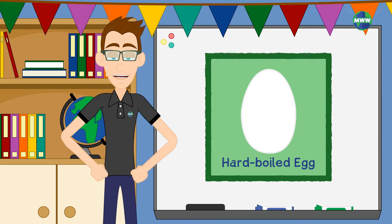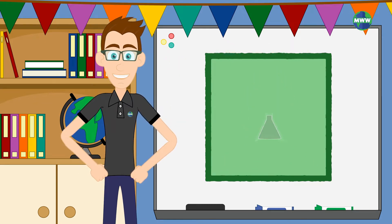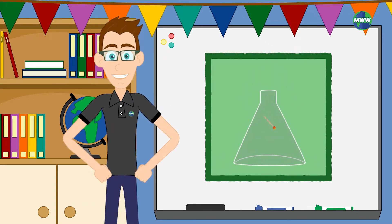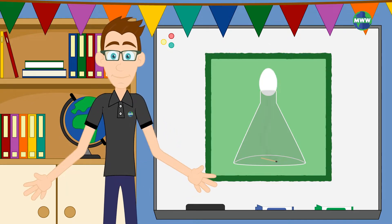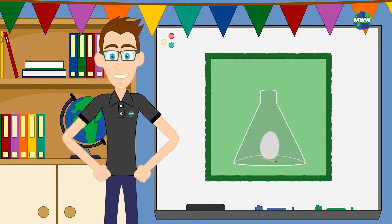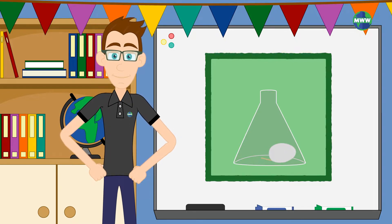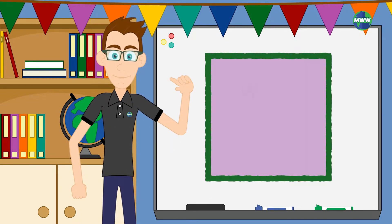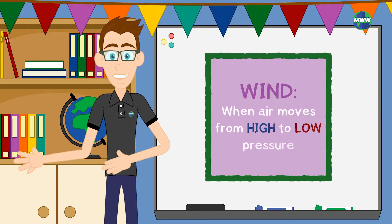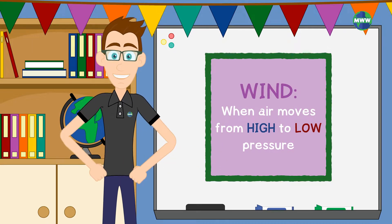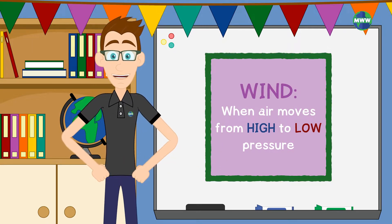Imagine having a peeled hard-boiled egg. Drop a match into a glass flask and place the egg on top. What happens? The hard-boiled egg gets squeezed into the flask. Why? Well, air moves from high to low pressure. When this happens, we call it wind.